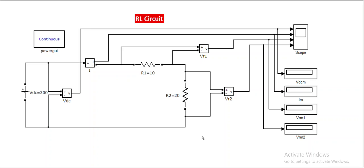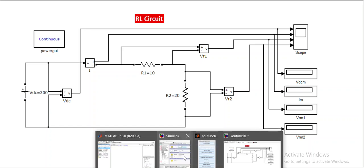Let us discuss our RL circuit today. This is the circuit for a DC source connected to two resistors. But in an RL circuit, an inductor is involved, so if an inductor is involved, an AC source is more appropriate compared to a DC source, as a DC source has no impact on inductance. So let me change this DC source to AC first.